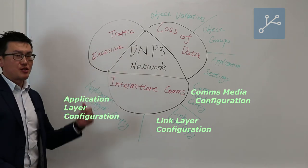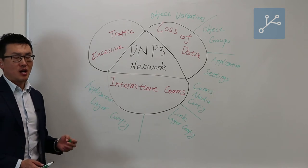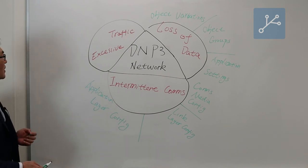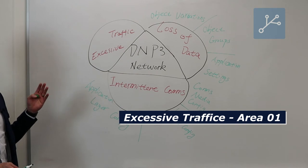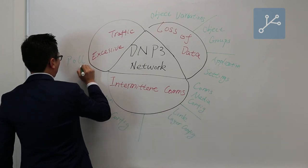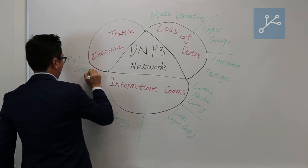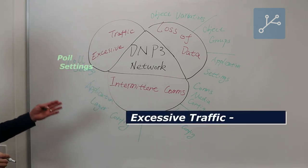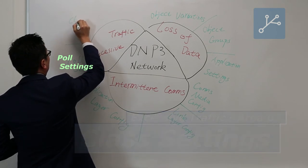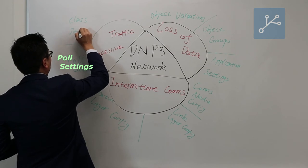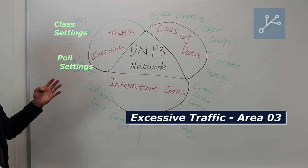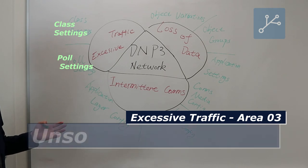Now let's move on to our third major issue, excessive traffic. Under excessive traffic, there are three areas to investigate. The first area is poll setting. The second area is called class settings. And the final area for the excessive traffic investigation is called unsolicited messages.